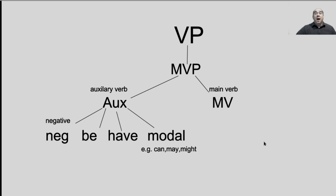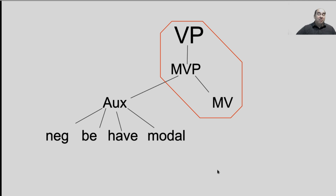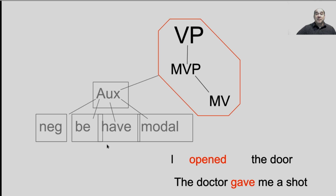A verb phrase is always going to include a main verb, and it may include an auxiliary depending on whether those parts exist in the sentence. You may have a negative, the be verb, the have verb, or a modal inside your auxiliary. You're always going to have a main verb, but you may also have the auxiliary. Here are sentences with only a main verb: "I opened the door" — the main verb is "opened." "The doctor gave me a shot" — that's the main verb. When building the tree, you'd have: sentence → verb phrase → main verb phrase → main verb "gave."